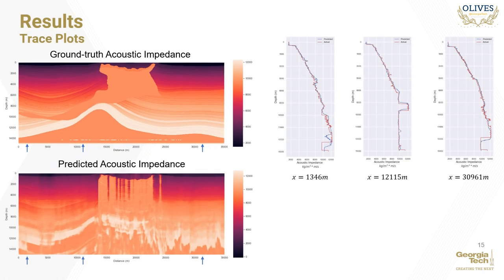Here, we look in more detail at the trace plots produced by the estimated profile as they compare to the ground truth profile. We pick positions of x equals 1,346 meters, 12,115 meters, and 30,961 meters — all positions not in the training set. We observe how the estimated traces follow the long-term trends in ground truth acoustic impedance very closely for the most part. In areas towards the top, we also observe places where the estimated trace captures the high frequency variations in acoustic impedance.